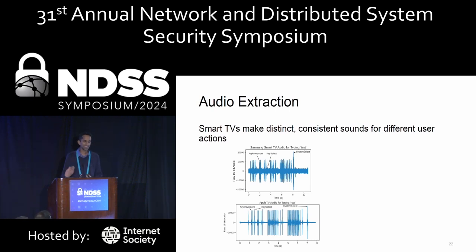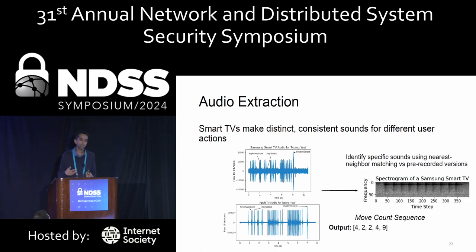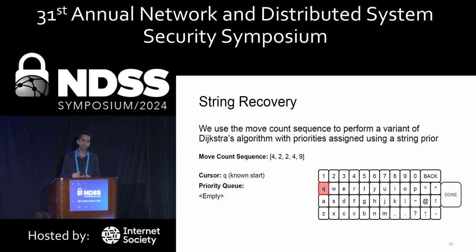Smart televisions make very distinct and consistent sounds for different user actions on the keyboard. This consistency stems from the fact that the sounds come from the platform itself rather than from the user's behavior. Because of this consistency, we can effectively identify sounds using a nearest neighbor matching approach, comparing sounds observed at runtime to pre-recorded versions offline. Once we establish the sounds, we assign the associated actions — movements, selections, or deletions — and create the move count sequence, representing the number of movements the user makes between selections on the keyboard.